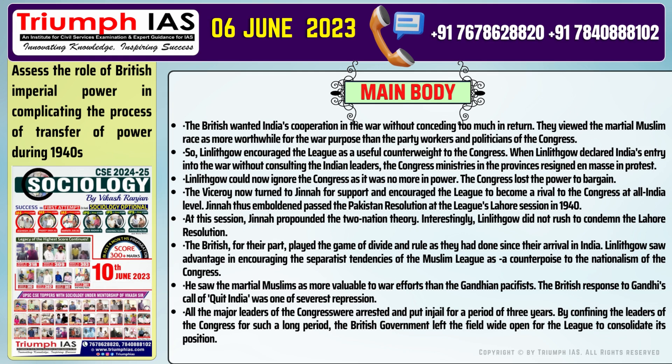Point 6: The British, for their part, played the game of divide and rule as they had done since their arrival in India. Linlithgow saw advantage in encouraging the separatist tendencies of the Muslim League as a counterpoise to the nationalism of the Congress. Point 7: He saw the martial Muslims as more valuable to war efforts than the Gandhian pacifists. The British response to Gandhi's call of Quit India was one of severest repression.